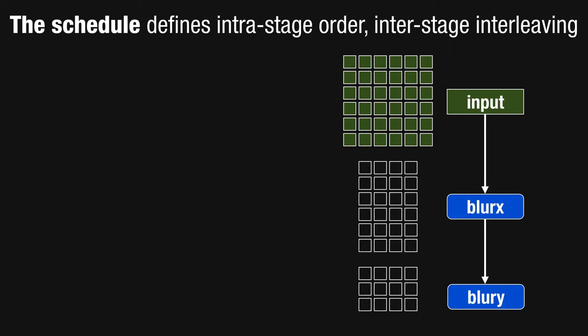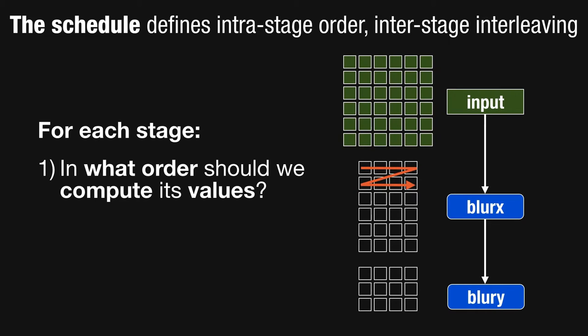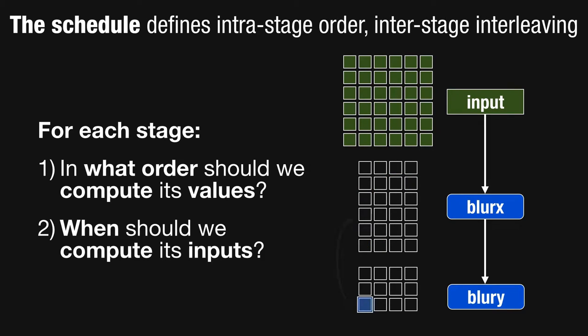The Halide schedule defines the organization of computation in an image processing pipeline by specifying two things. First, for each stage, in what order should we compute its values? We're computing whole grids of pixels for each of these functions, so in what order should we compute the points in each of these grids? We call this part of the schedule the domain order, and it includes things like parallelization, vectorization, unrolling, and tiling.